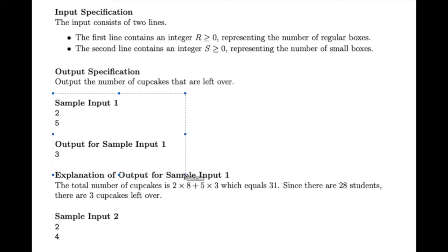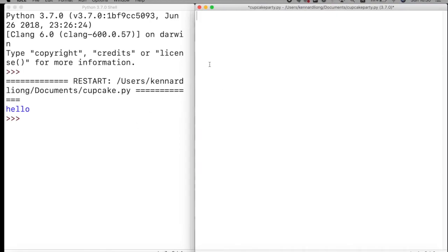So the inputs, assume it's two and five. There's going to be two regular boxes and five small boxes. Two times eight plus five times three is 31, and 31 minus 28 is going to be three, so there's three left over. So the first input is going to be the number of regular boxes of cupcakes.